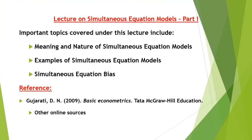As mentioned, in the first part we discussed the meaning, nature, and definition of simultaneous equation models, examples, and the problem of simultaneous equation bias. The major reference text used is Basic Econometrics by Damodar Gujarati, with some clarifications from internet sources. One important precondition is having at least a minimum knowledge of the basics of regression methodology, so please go through the previous topics before this session.